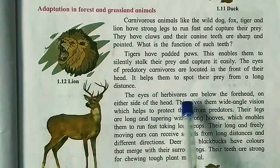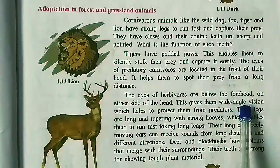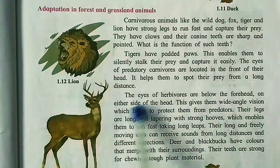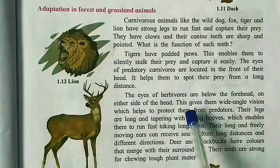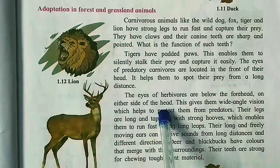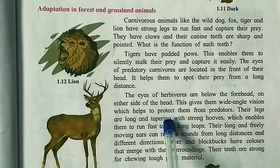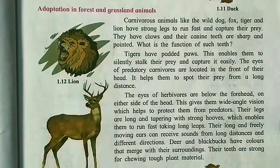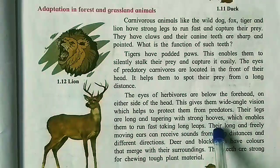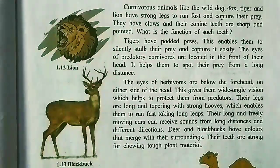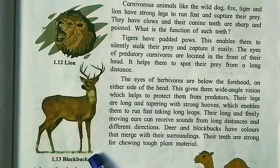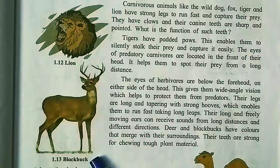Herbivores live on plants. The eyes of herbivores are below the forehead, on either side of the head — unlike carnivores whose both eyes are in front. This gives them wide-angle vision, which helps protect them from predators. Their legs are long and tapering with strong hooves, which enable them to run fast and take long leaps.